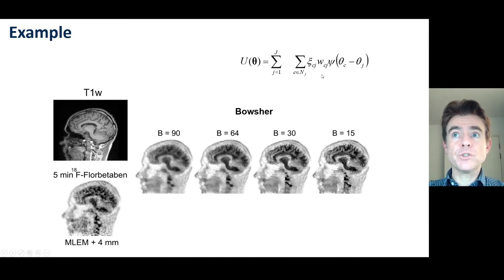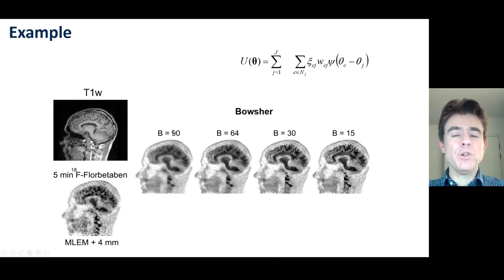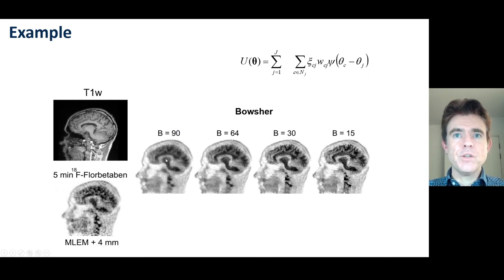If we choose a large number of 1s in the weighting map, for example 90, that means we're allowing a lot of pixels to be smoothed across. For that reason, this almost looks like a regular quadratic penalised MAP-EM reconstruction.